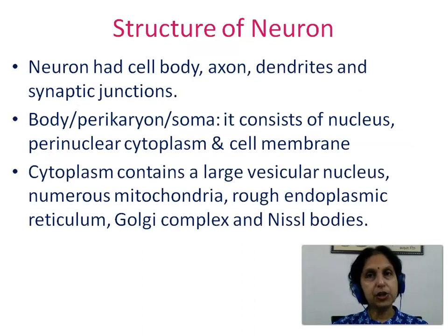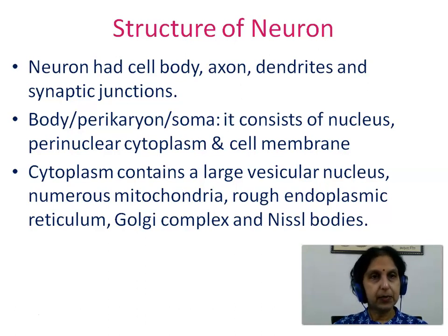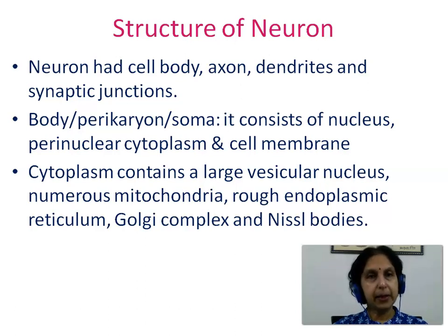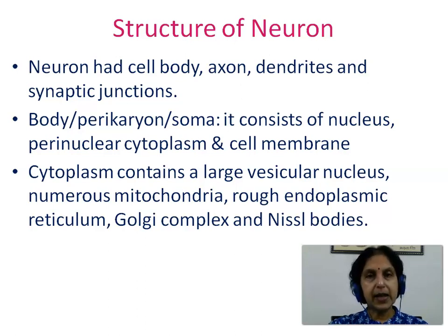The neuron has a cell body, processes which are axon and dendrites, and synaptic junctions. The cell body, also called the perikaryon or soma, consists of nucleus, perinuclear cytoplasm, and the cell membrane. The cytoplasm contains a large vesicular nucleus, numerous mitochondria, rough endoplasmic reticulum, Golgi complex, and Nissl bodies.